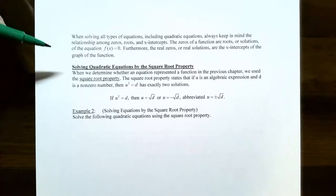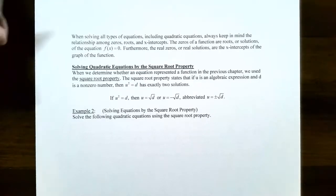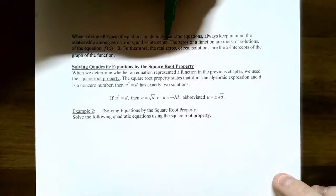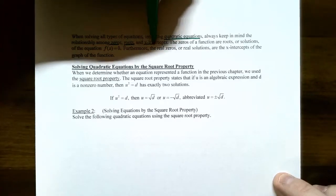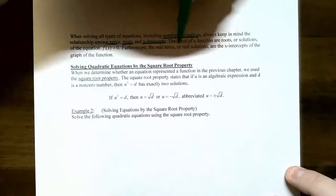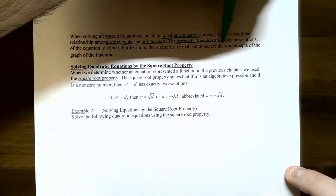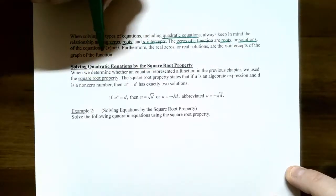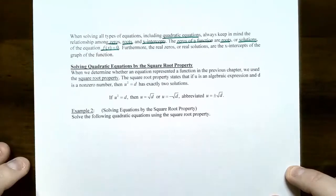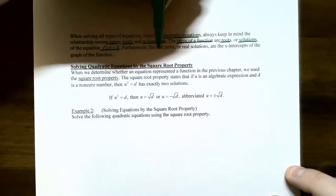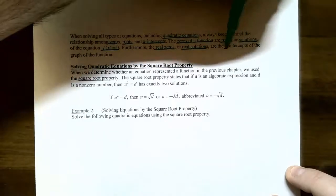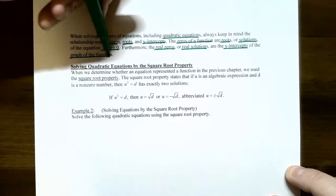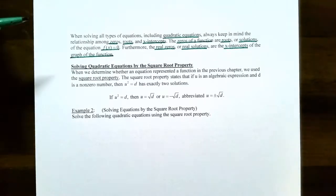As we go through this video solving using the square root property and completing the square, keep in mind that when solving types of equations including quadratic equations, zeros, roots, and x-intercepts are all synonymous. The zeros of your function are the roots or the solutions to a quadratic equation. So if you have a y-value equal to zero, real zeros or real solutions to an equation are the x-intercepts on the graph of a function. So let's talk about solving quadratic equations by the square root property.